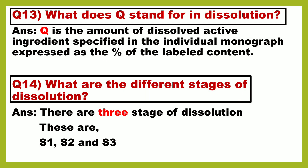Next question is: what does Q stand for in dissolution? Q is the amount of dissolved active ingredient specified in the individual monograph, expressed as a percentage of the label content. Next question is: what are the different stages of dissolution? There are three stages of dissolution — S1, S2, and S3.